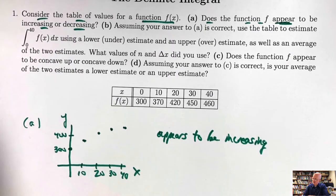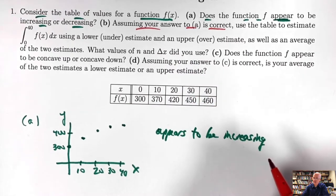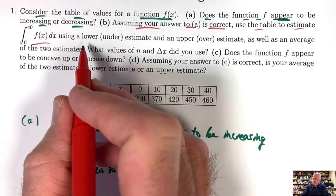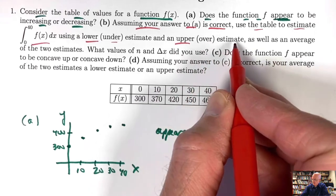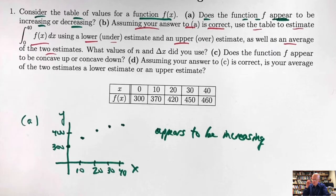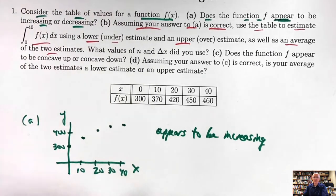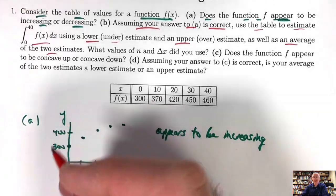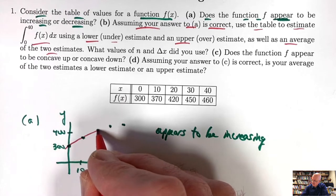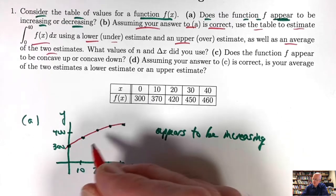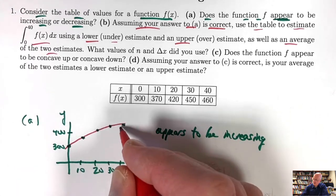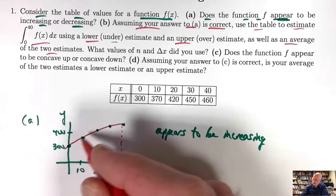Part B says, assuming your answer to part A is correct — that it really is an increasing function — use the table to estimate this integral, specifically to get a lower or underestimate, and an upper or overestimate, as well as an average of the two estimates. We're trying to approximate a definite integral, which, when the graph is above the axis as this appears to be, will be the area under the curve. Let's draw a plausible curve here and approximate the area of this region.